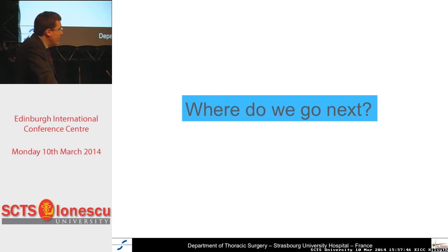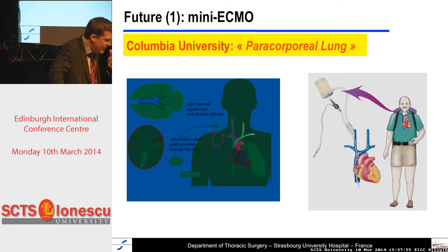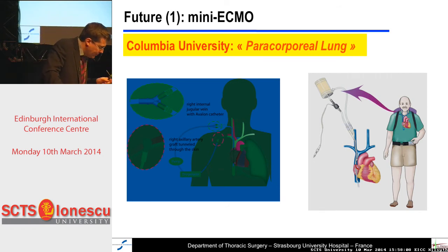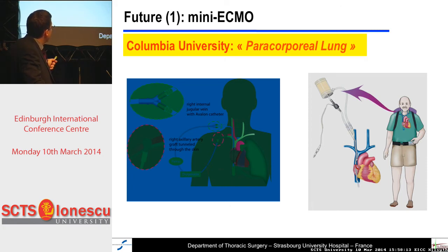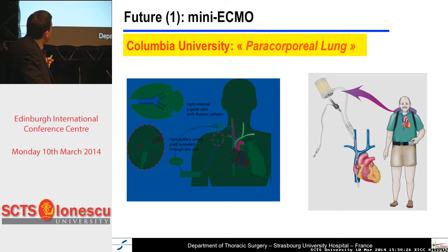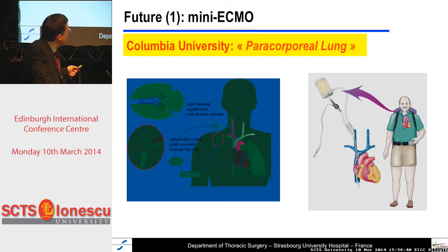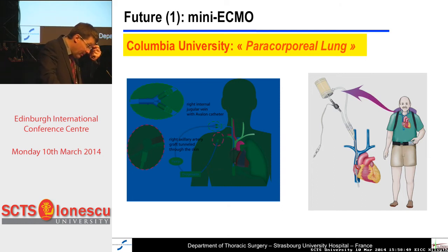Now, where do we go next? First, the mini ECMO — this concept comes from Columbia University and developed the concept of the paracorporeal lung. They use an Avalon cannula for the outflow, derive blood from the inferior and superior vena cava, and after the pump and oxygenator, the oxygenated blood is reinserted via the right atrium. The idea is to reduce the tubing, the size of the oxygenator, and the pump, making it a transportable device as has been done 20 years ago with transportable cardiac assist devices.